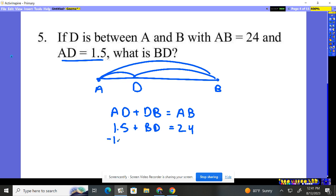So what do I do? I'm going to subtract 1.5 from both sides, and I get BD is 22.5 units.